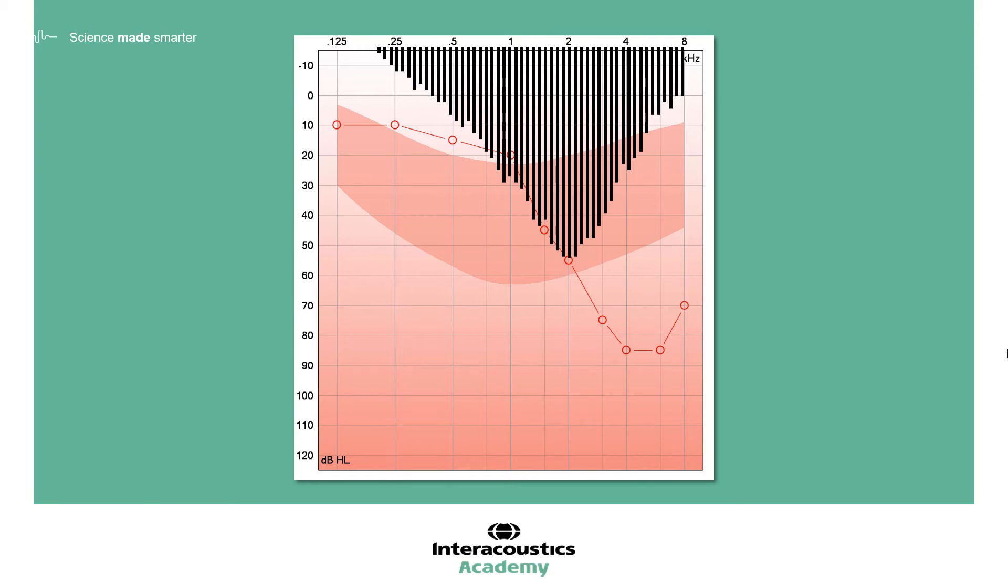In this example, presenting a 2 kHz narrowband noise stimulus is in fact stimulating such a wide range of the basilar membrane that we may be eliciting a response from a frequency region other than 2 kHz. This is particularly important to be aware of in cases of possible sloping hearing losses.